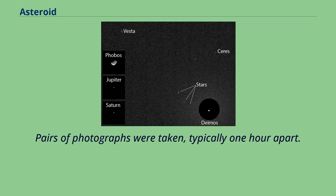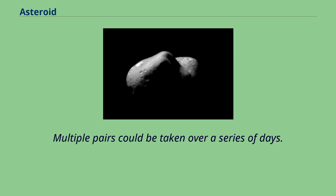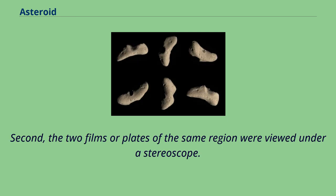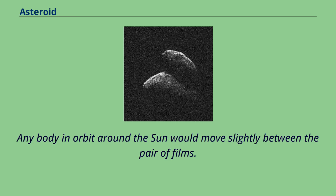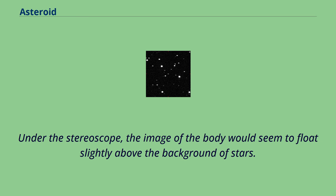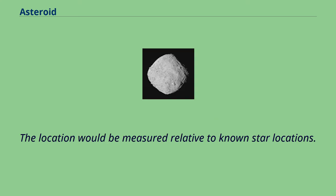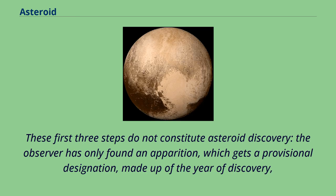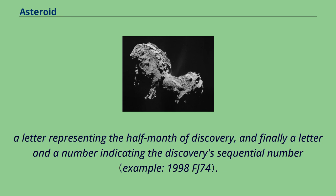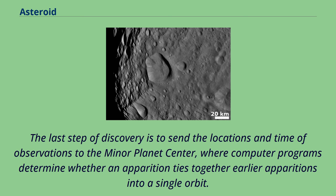Pairs of photographs were taken, typically one hour apart; multiple pairs could be taken over a series of days. Second, the two films or plates of the same region were viewed under a stereoscope. Any body in orbit around the sun would move slightly between the pair of films; under the stereoscope, the image would seem to float slightly above the background of stars. Third, once a moving body was identified, its location would be measured precisely using a digitizing microscope relative to known star locations. These first three steps do not constitute asteroid discovery — the observer has only found an apparition, which gets a provisional designation made up of the year of discovery, a letter representing the half-month of discovery, and a letter and number indicating the discovery's sequential number.